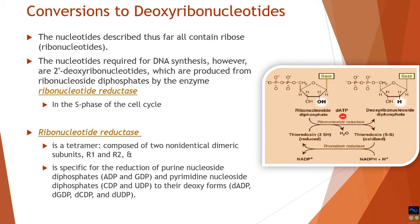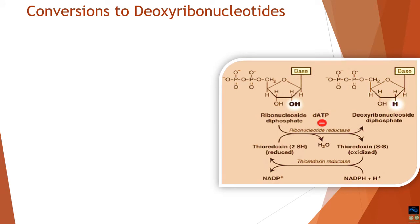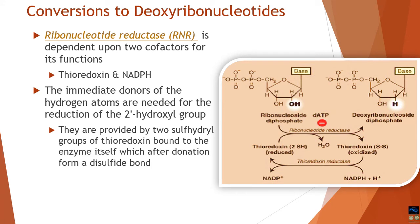Ribonucleotide reductase is specific for the reduction of purine and pyrimidine nucleoside diphosphates to their deoxy forms — for example, converting ADP to dADP. To perform this function, it depends on two factors: thioredoxin, which remains attached to ribonucleotide reductase, and NADPH from the HMP shunt, which is a reducing equivalent that donates its hydrogen to thioredoxin.